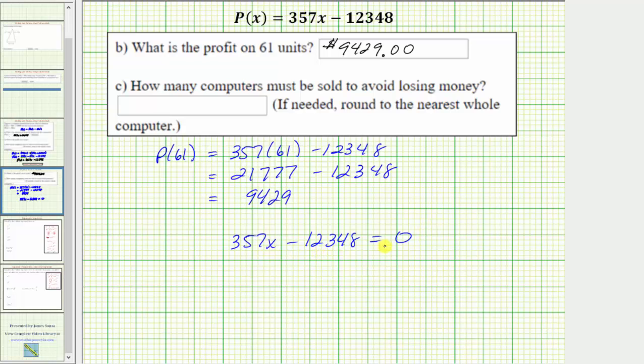And now we'll solve for x so we'll add 12,348 to both sides. Which would give us 357x equals 12,348. And we'll solve for x so we divide both sides by 357. Simplifying we have x is equal to this quotient which we'll have to round. 12,348 divided by 357 is approximately 34.59.